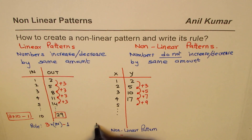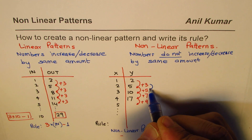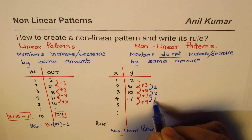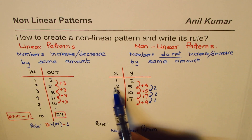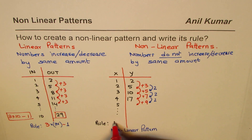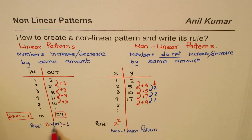Now let's write the rule for this nonlinear pattern. Looking at the differences between outputs: 5 minus 3 is 2, 7 minus 5 is 2 — the second differences are constant. When second differences are constant, we are working with the square of the input, not just the input itself. So the rule involves x squared.